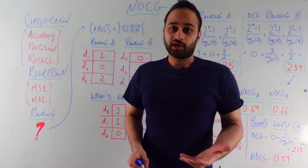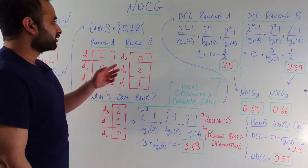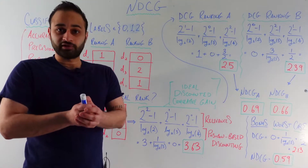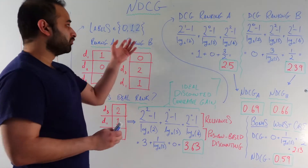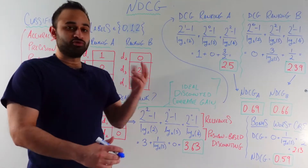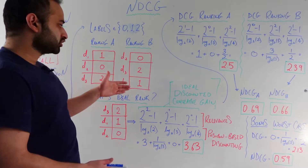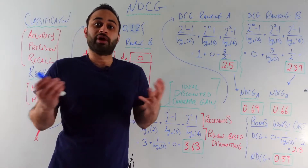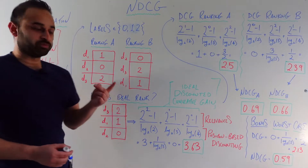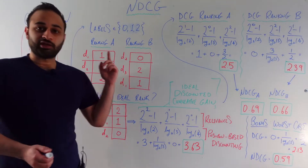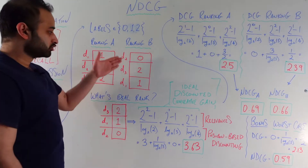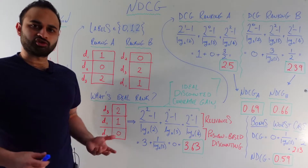So let me set that up with a hypothetical example. Let's say we're dealing with a ranking problem where the relevance labels are either zero, one, or two. Zero means the item is not relevant at all for the particular query, one means it's moderately relevant, and two means it's the absolute most relevant possible. Now let's say I give you two rankings — they're pretty simple, just three items each — and I ask you which of these is better. So the first ranking is document one, document two, document three, which have labels one, zero, and two respectively. And ranking B is document two, three, and then one, with labels zero, two, and one. Which one is better?